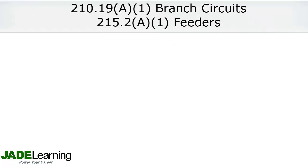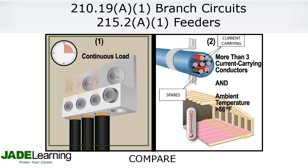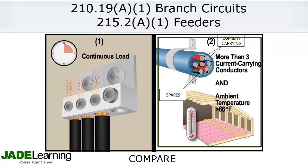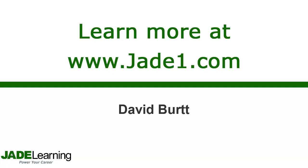The main point is that if a single circuit supplies a continuous load, has more than three current carrying conductors, and or is in an ambient temperature hotter than 86 degrees Fahrenheit, we should compare the size of the conductor needed to supply the continuous load with the size of the conductor needed because there are more than three current carrying conductors and or the ambient temperature is hotter than 86 degrees Fahrenheit. And we select the larger of the two conductors we get after making the comparison.